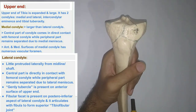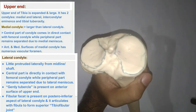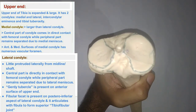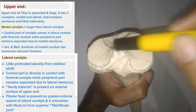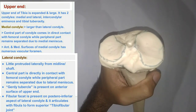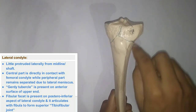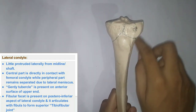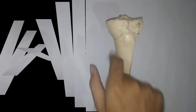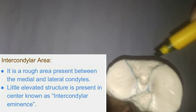The center part of both condyles comes in direct contact with the condyles of the femur, while the peripheral part attaches to the meniscus of the knee joint. One more difference between the medial and lateral condyle is that the lateral condyle is slightly more protruded out of the body compared to the medial side.